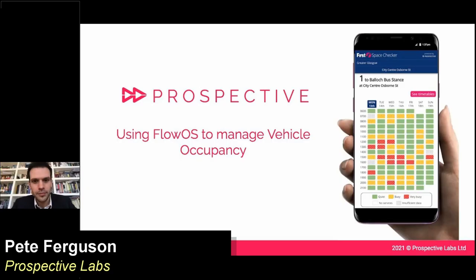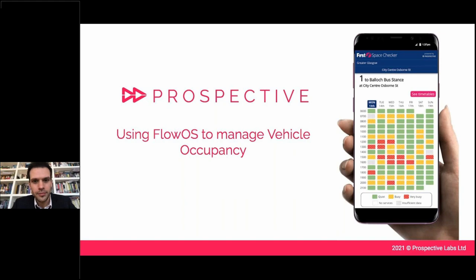What we'll go through is a set of slides describing our work to deliver vehicle occupancy estimation for the whole of First Bus fleet across the UK. This work is part of a wider set of tools that we apply as a business. I'll first talk a little bit about who Prospective are and the background to our work, so you'll understand the context behind the delivery of the Space Jacket tool that we'll talk about later.